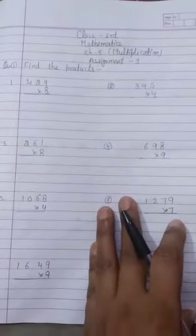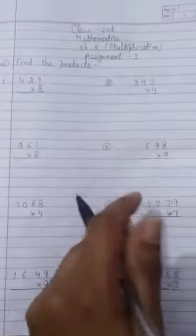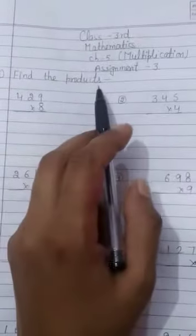Today we will do chapter number 5 multiplication. So let's come on to question number 1. Find the products. Products means multiply.